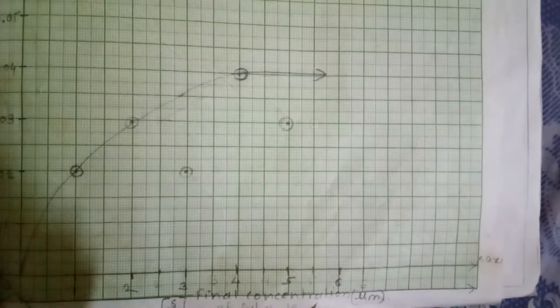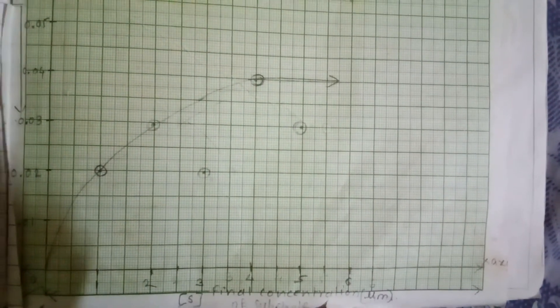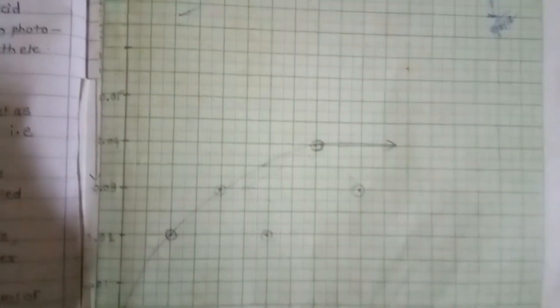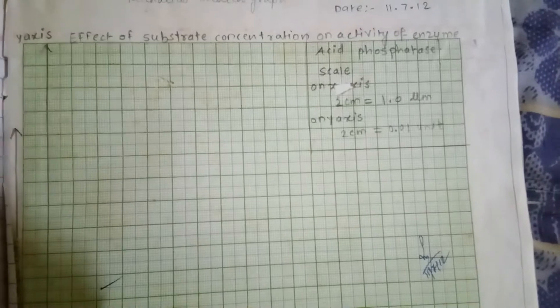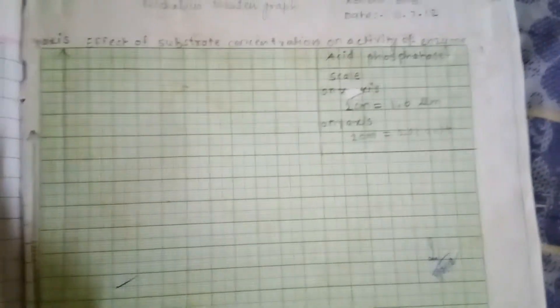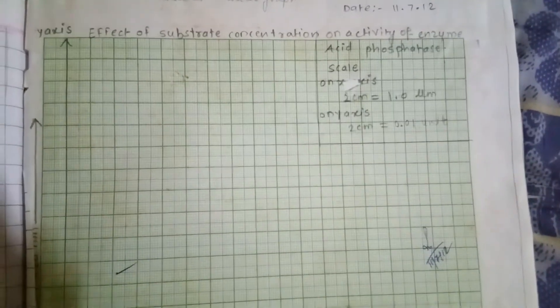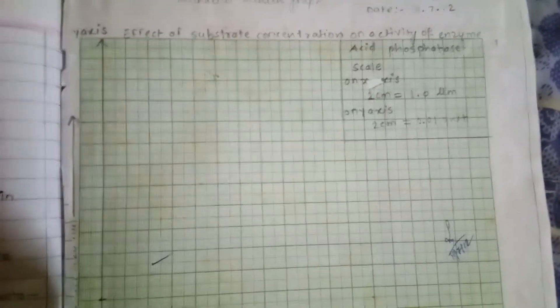On the graph, the x-axis shows the final concentration of substrate in micromolar and the y-axis shows OD values at 420 nanometer. A rectangular hyperbola is obtained. When plotting the graph, it is necessary to mention the scale on both axes, the axis names, and the title of the experiment.